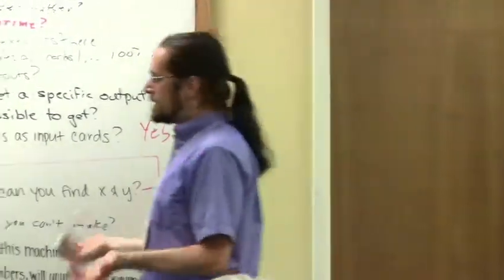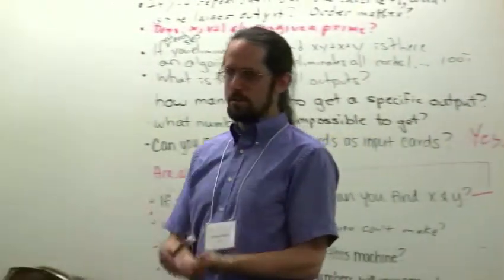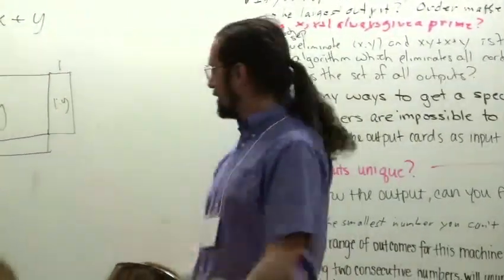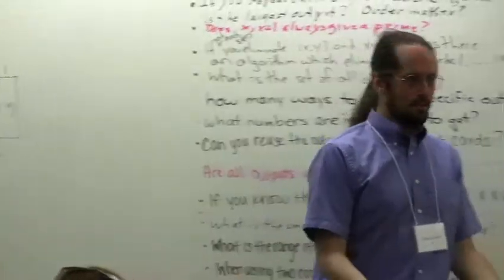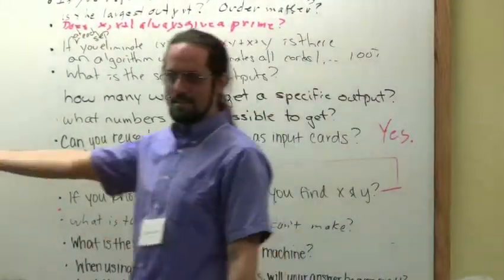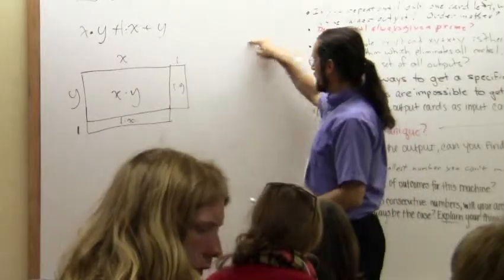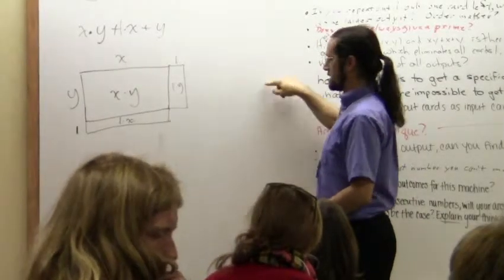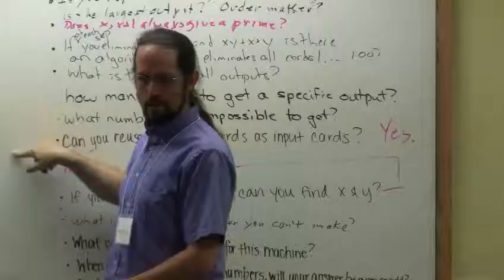So it seems to me like everybody I talked to learned completing the square in their Algebra 1 class. I have never met anybody who learned completing the rectangle. But it's the same idea, right? For completing the square, you take your x squared, you put three x's here, three x's here, you say, oh, I need nine more to finish my square. You can complete rectangles, too.